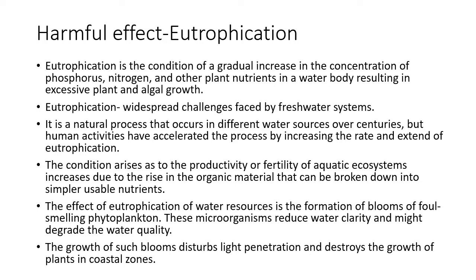First, let's look at a harmful effect: eutrophication. Most of you may have heard of this term, as it is taught in higher grades as well. Eutrophication is the condition of a gradual increase in the concentration of nutrients like phosphorus, nitrogen, and other plant nutrients in a water body, resulting in excessive plant and algal growth in stagnant water bodies like lakes or ponds.